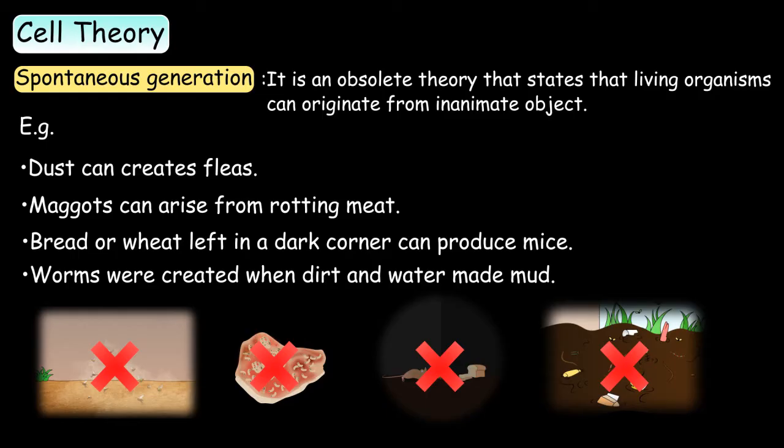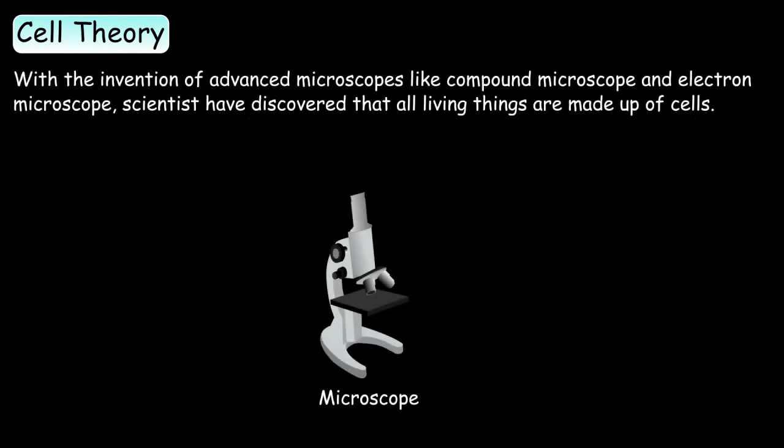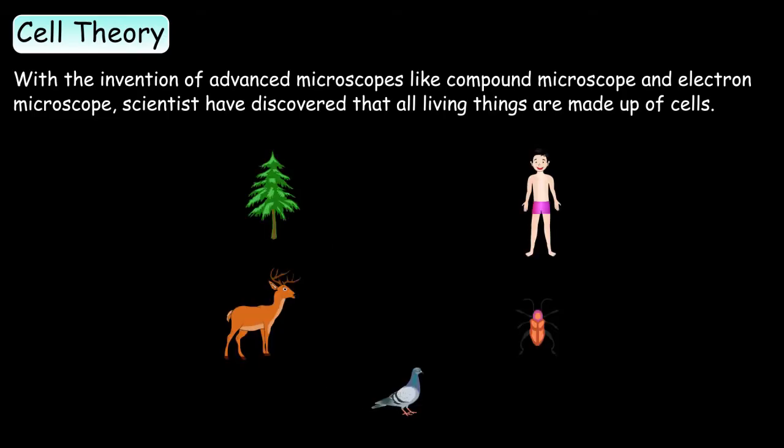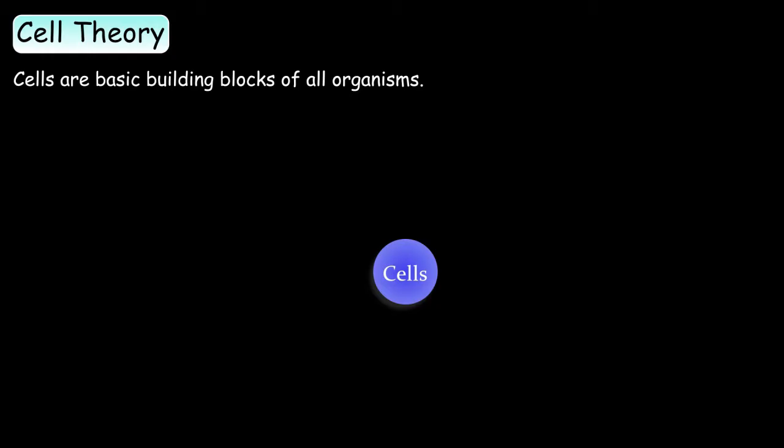Now, coming back to cell theory, which is the accepted theory by scientists, with the invention of advanced microscopes like the compound microscope and the electron microscope, scientists have discovered that all living things are made up of cells. Cells are the building blocks of all organisms and cells can only arise from other cells.